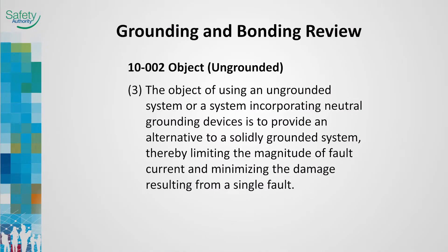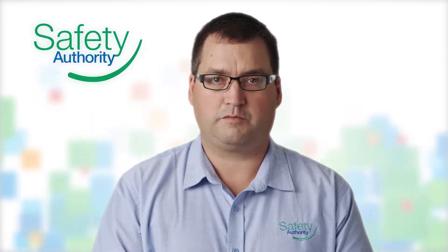Rule 10-002 speaks of using an ungrounded system. Ungrounded and neutral grounding schemes are often installed when some industry processes cannot be interrupted. Usually found on larger installations, qualified electrical maintenance staff will monitor and respond to ground fault conditions prior to a large system fault occurring.